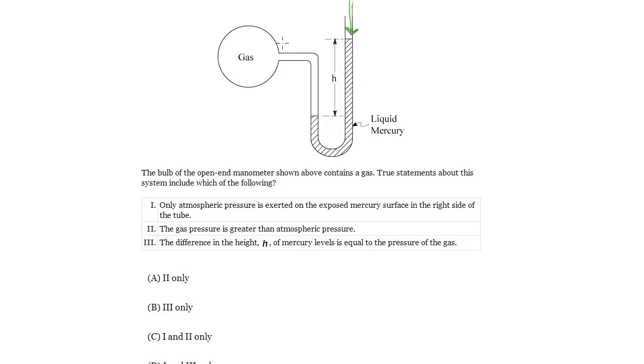Now, normally when this manometer was set up, before you put a gas in, the mercury was equal on both sides. As soon as we put a gas into the bulb, it pushes the mercury down and displaces it up. But it doesn't go up forever. Eventually the gas in here and the pressure down here equilibrate, so they're equal, and at that point you've determined what your H is. So statement I is indeed true.